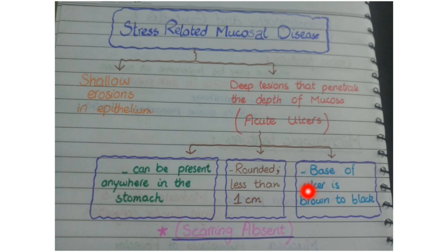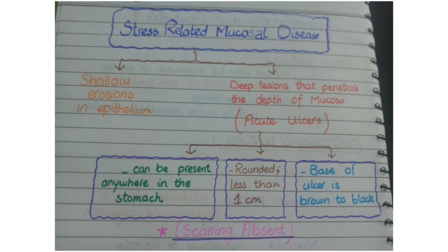Third, the base of the acute ulcer is stained brown to black. A characteristic feature is that scarring is absent in these acute ulcers, because scarring is a feature of chronic inflammation and chronic damage. In stress-related mucosal disease, the stress is acute — physiological or psychological — so there is no scarring. This concludes the pathology of stress-related mucosal disease.